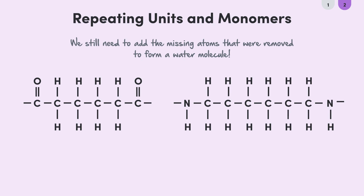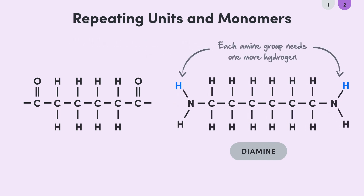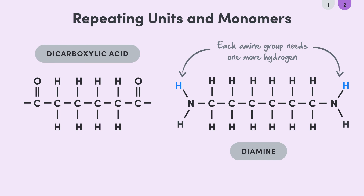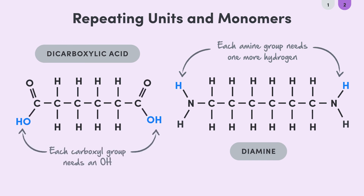We know that out of dicarboxylic acids and diamines, only diamines are going to have nitrogen atoms, so this one must be the diamine. What atoms are missing from the amine functional groups here? They each just need one more hydrogen atom bonded to the nitrogen, so let's add that in. That means this other molecule must be the dicarboxylic acid, so let's complete the carboxyl groups — it looks like we just need to add a couple of OH groups. And there you go, we've got our complete monomers.